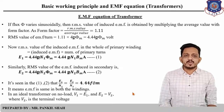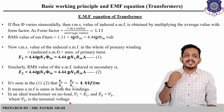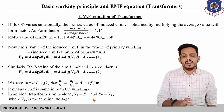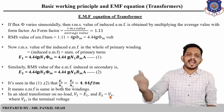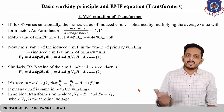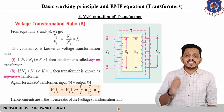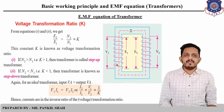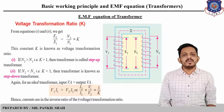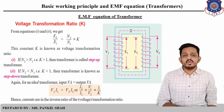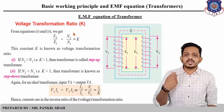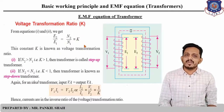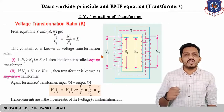For an ideal transformer at no-load condition, the applied voltage equals the EMF induced in that winding, and the EMF induced in the secondary winding equals the terminal voltage V2 at the load. Now let us define the voltage transformation ratio. The voltage transformation ratio K is obtained by dividing equation 2 by equation 1: K = E2/E1 = N2/N1. This constant K is known as the voltage transformation ratio.